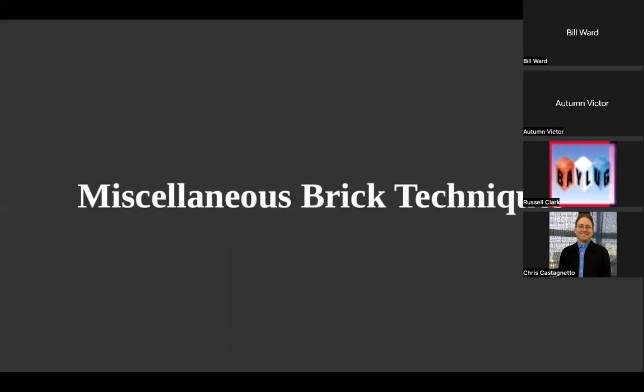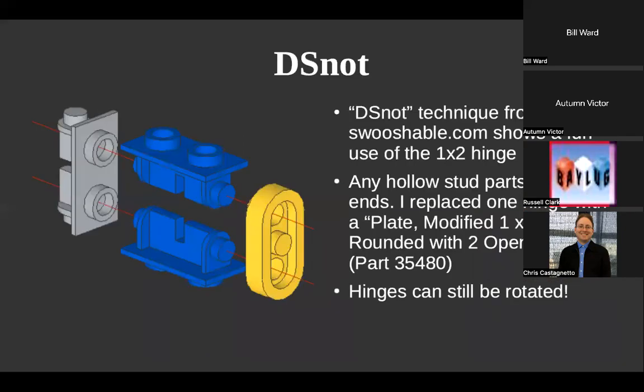I'm going to finish the presentation with a few random techniques. The first one is called de-snot — I'm not sure why it's called that, but obviously SNOT stands for studs not on top. This is technically not a legal build because the pins on the sides of those hinge parts aren't supposed to go into a hollow stud, but they do fit if you push hard. The nice thing is you can still rotate the blue hinge parts in place, and the gray hinge part could be attached to other hinge pieces, or as I've done on the other side with the yellow, attached to some studs.